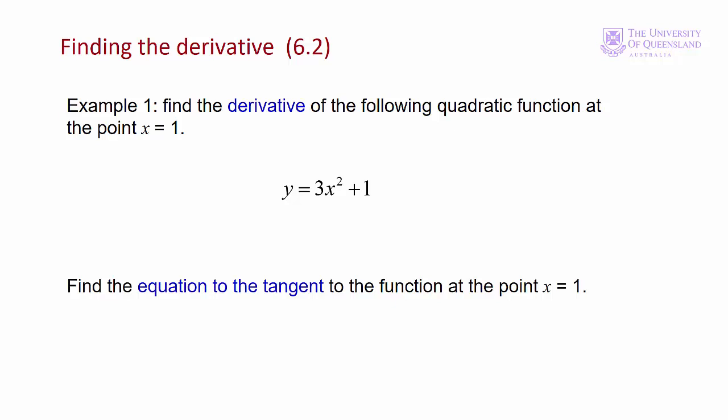What we want to do is find the derivative or the slope of this simple quadratic function at point x equals 1. After we have that, we'll go on and find the equation to the tangent also at point x equals 1.